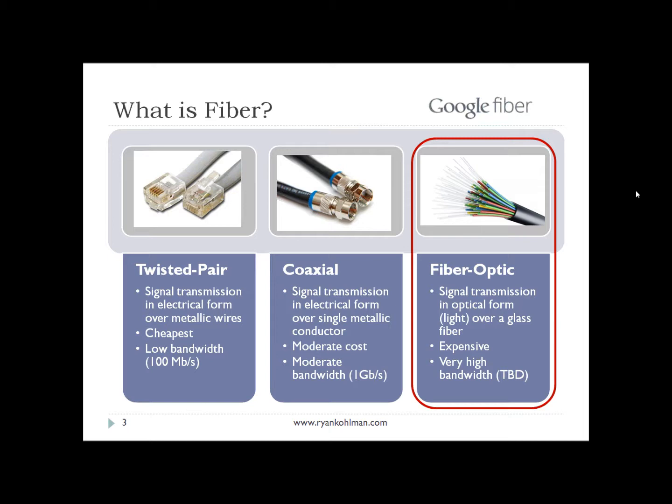The final method, and the one that Google Fiber actually uses, is fiber optic cabling. Fiber optic cabling is a cable made out of glass tubes — you're actually transmitting optical light over those glass tubes to transfer your signals. Rather than an electric signal traveling over metal, you basically have light traveling through glass. It is the most expensive option and is very high bandwidth. In fact, the theoretical maximum limit of this cabling has not been reached yet by any engineer. This is also why you don't see fiber everywhere — it takes a lot of work and cost to wire fiber optic cabling into residences.